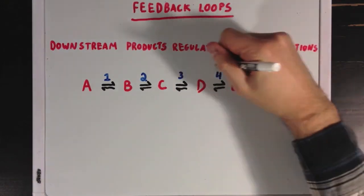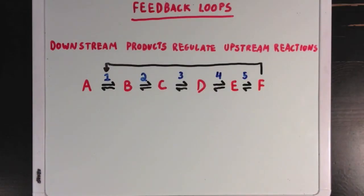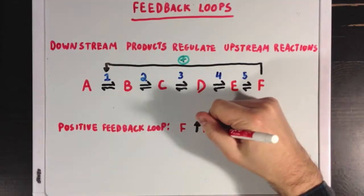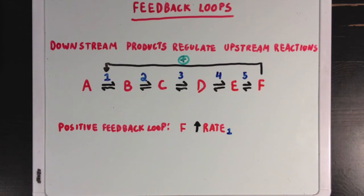Let's say that molecule F acted as an activator for the enzyme powering reaction 1, so it had a positive effect on enzyme 1's activity. We would call this a positive feedback loop, since molecule F increases the rate of reaction 1, which then causes even more F to be made, since we've increased the rate of formation of molecule F.